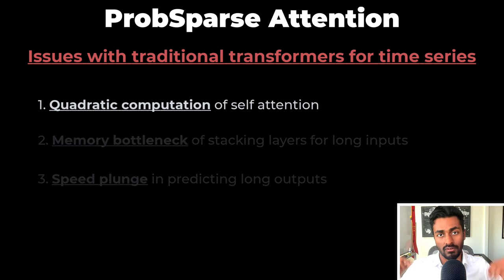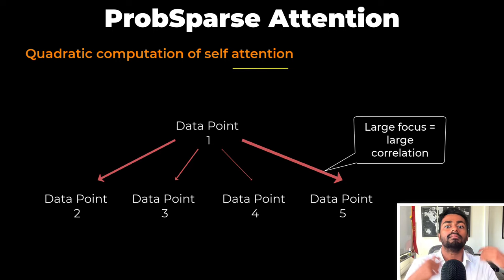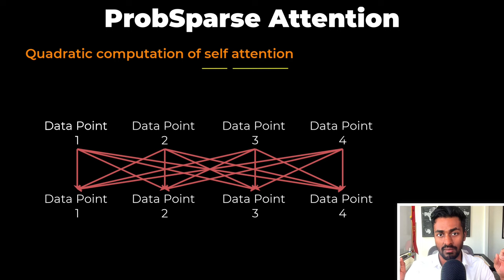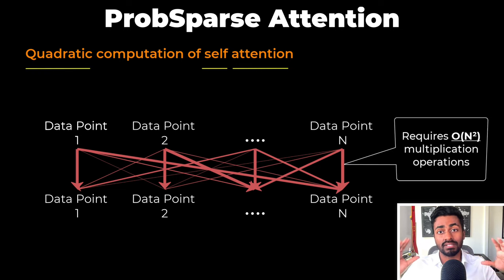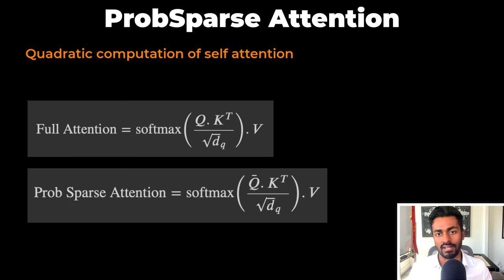The main issue that we want to focus on for this video is primarily the quadratic computation of self-attention. Attention involves how much focus one data point should have on another data point — larger the focus means greater the correlation. Self-attention means that we compare all the input data points to all the same input data points and identify these correlations. For n input time series data points, traditional full self-attention is going to require some order of n squared multiplication operations.